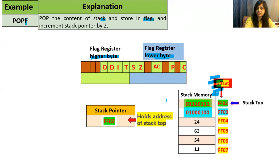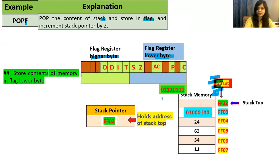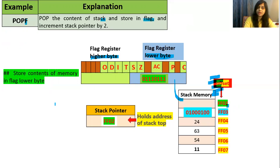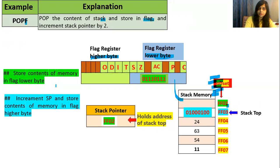In POP, first it transfers the contents at the address pointed by the stack pointer — whatever is at FF02 — into the flag lower byte. Lower address goes to lower byte. Then FF02 becomes empty, and stack top changes to FF03. So the stack pointer increments by 1, now pointing to FF03 because FF03 is the new stack top.